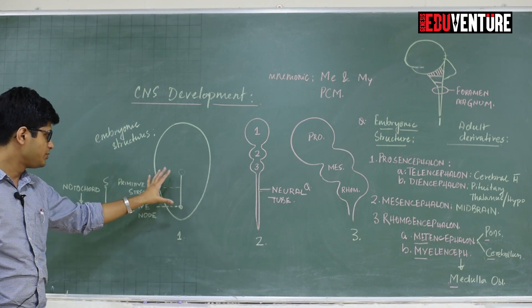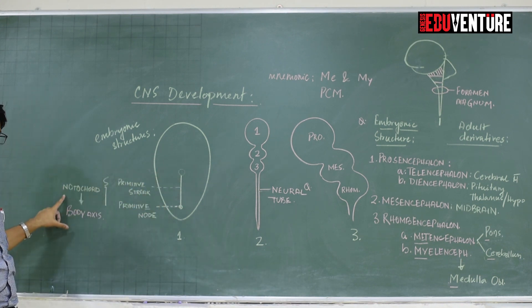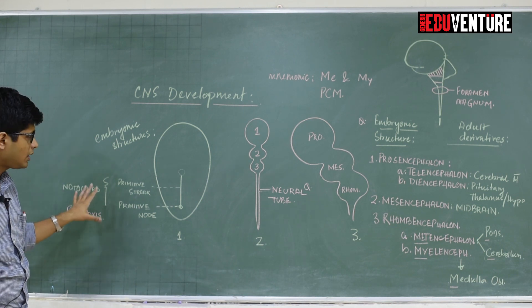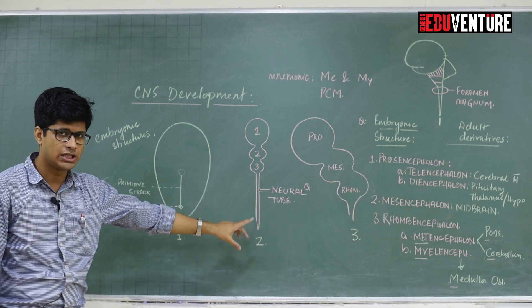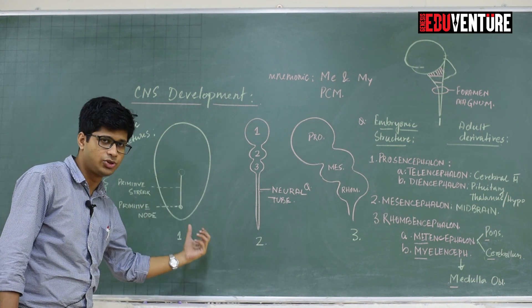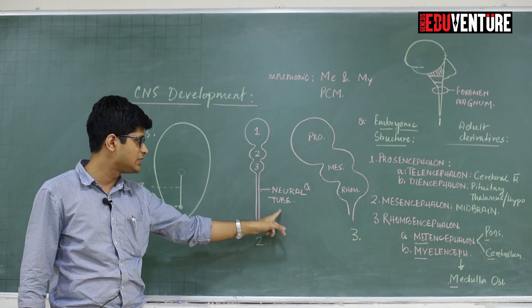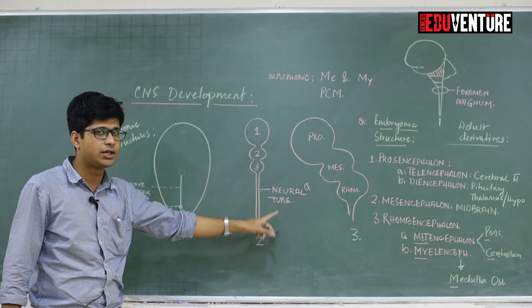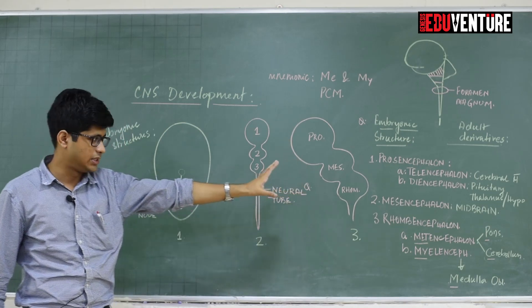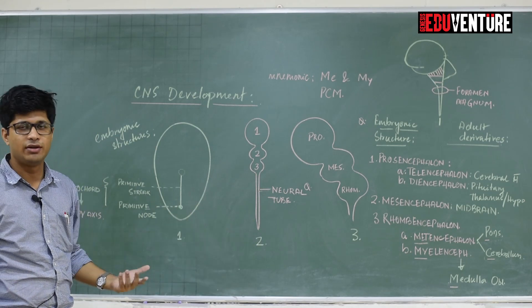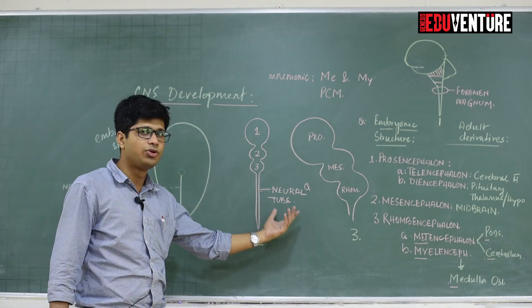This forms what is known as the notochord. Notochord forms the basis of the body axis. However, as far as CNS development is concerned, notochord is not required per se. But why did I say notochord? Because just above the notochord, a structure is formed known as the neural tube. The neural tube is going to be the embryonic derivative of the adult CNS. What is the embryonic derivative of the CNS? You will have to answer neural tube.